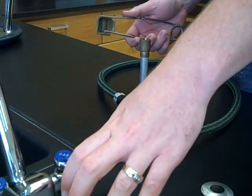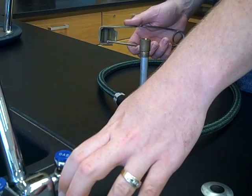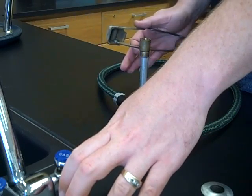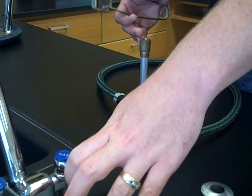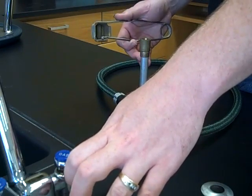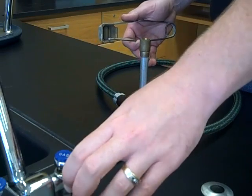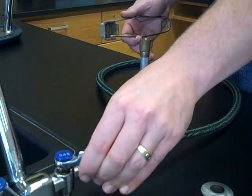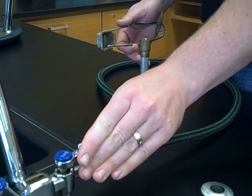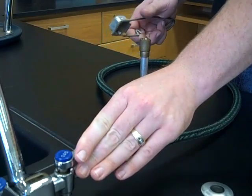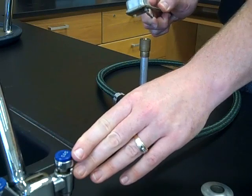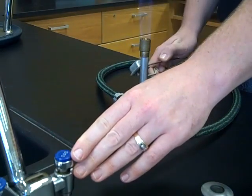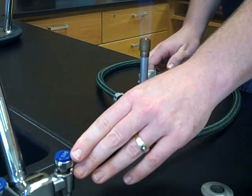When you're ready to ignite the Bunsen burner, first make sure that everything flammable is out of the vicinity, that hair and clothing are tied back or rolled up so they're not going to dangle into where the Bunsen burner flame is going to be. You turn on the main gas so that the handle is parallel to the gas jet and you listen for the gas to be coming through. Hold the striker above the barrel and squeeze until the flame ignites.